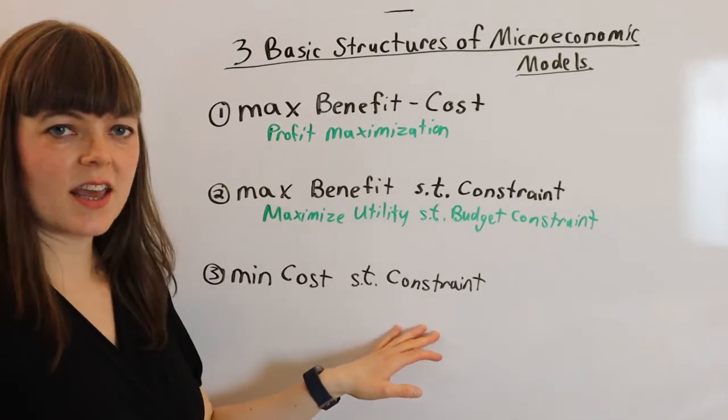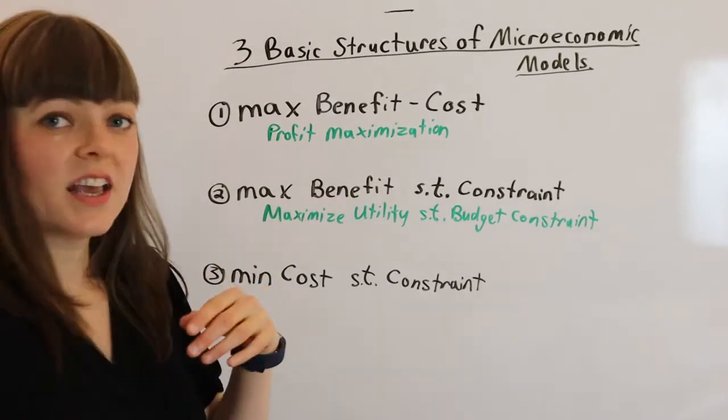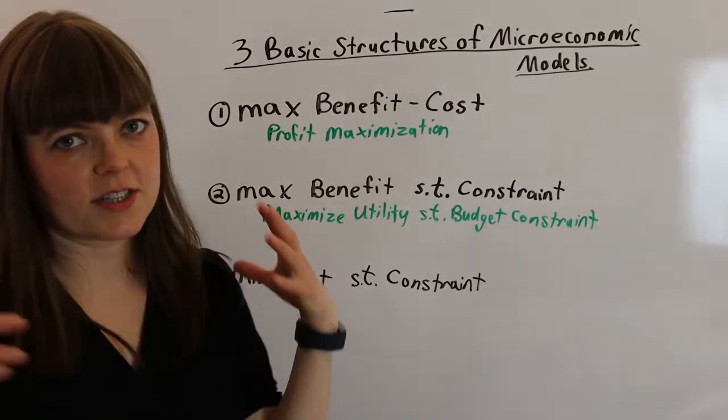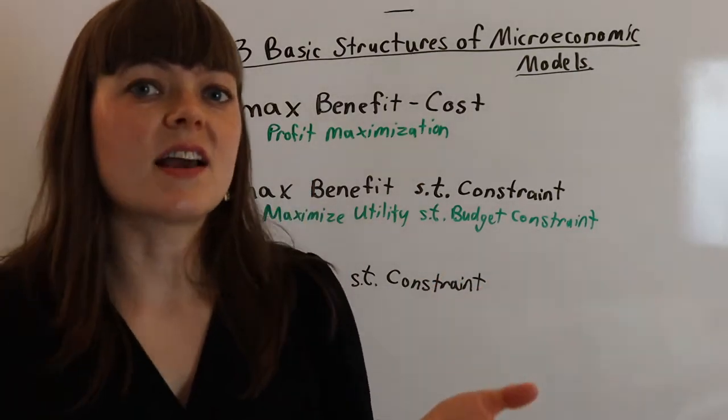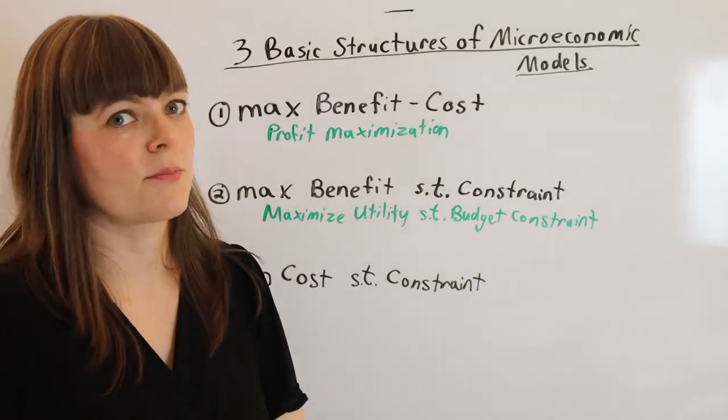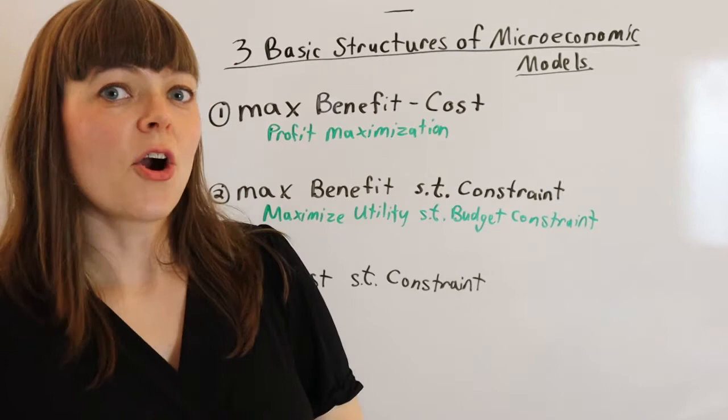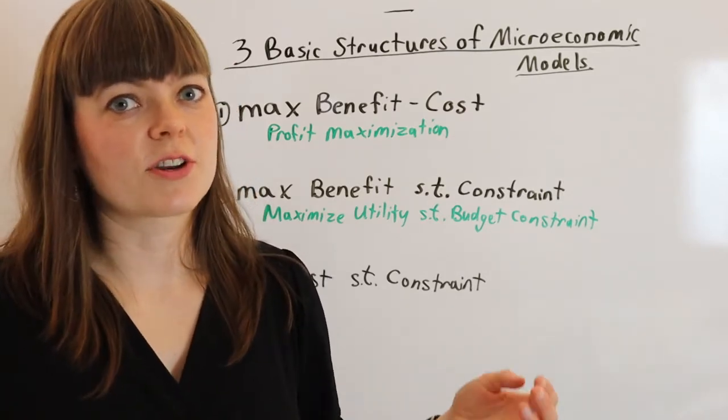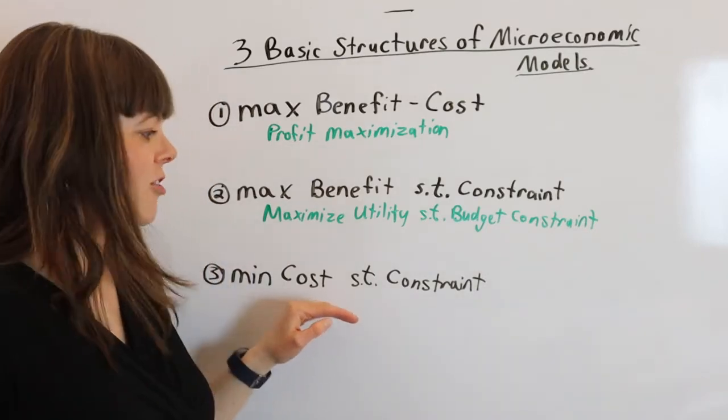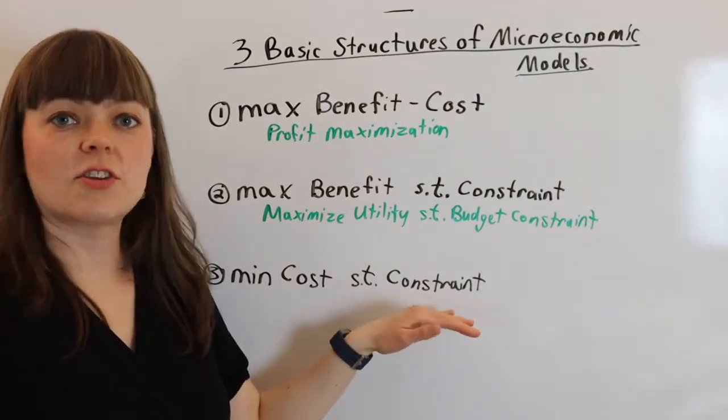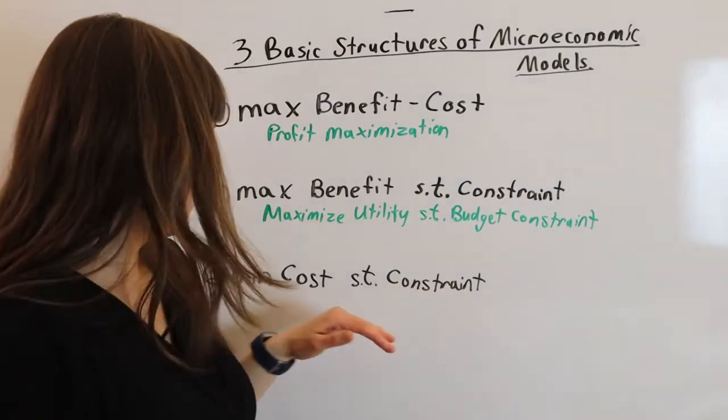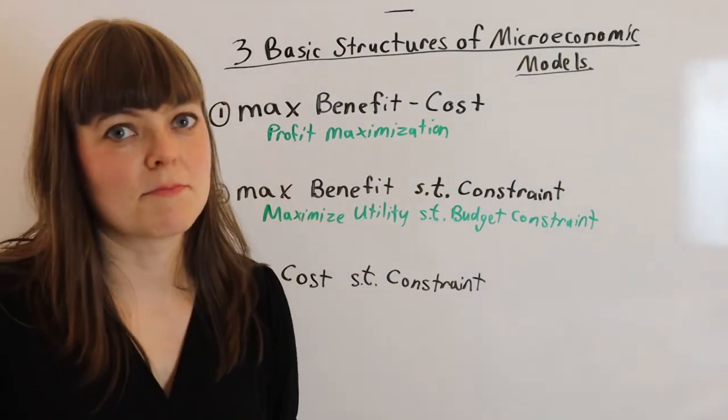Cost minimization subject to a constraint is also something you'll see occasionally. For example, this might be a firm that has signed a contract to provide a certain service. Maybe they're providing the catering to your wedding, or they've signed a contract to build a building, so they're going to minimize the cost of fulfilling their obligations in the contract. The constraint is what they're contractually obligated to provide and the cost is what they're trying to minimize.